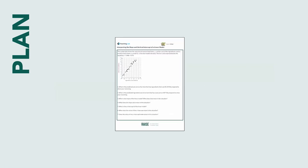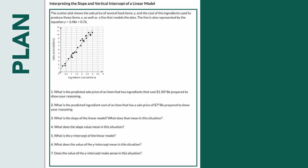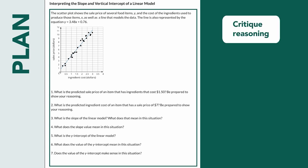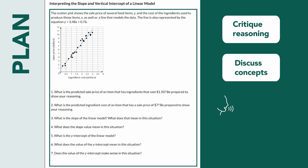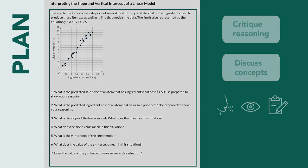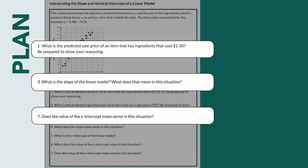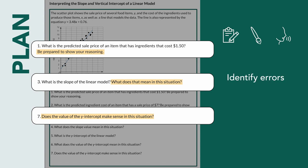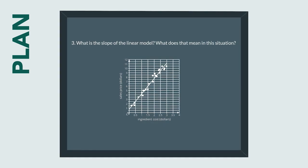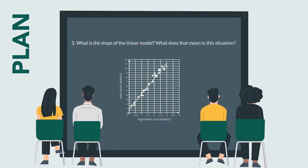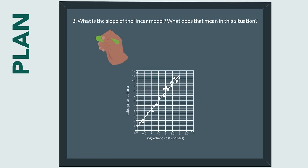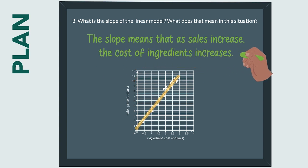Let's go back to the model. Here's the Algebra 1 task from before. I selected it because I believe students have enough knowledge to critique the reasoning of their peers, and it provides opportunities to discuss concepts orally, visually, and in writing. I noticed this task has students interpret the slope and vertical intercept of a linear model, and it includes multiple problems that build in complexity for students to demonstrate their understanding through writing, illustrating, and speaking. That means there are many opportunities to identify errors and lead students to critique, correct, and clarify their own work.